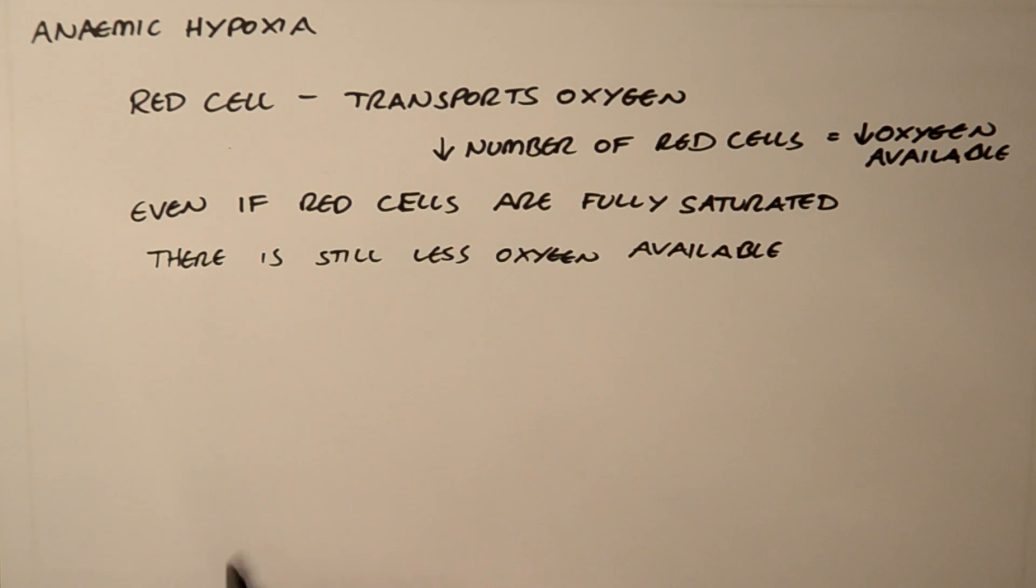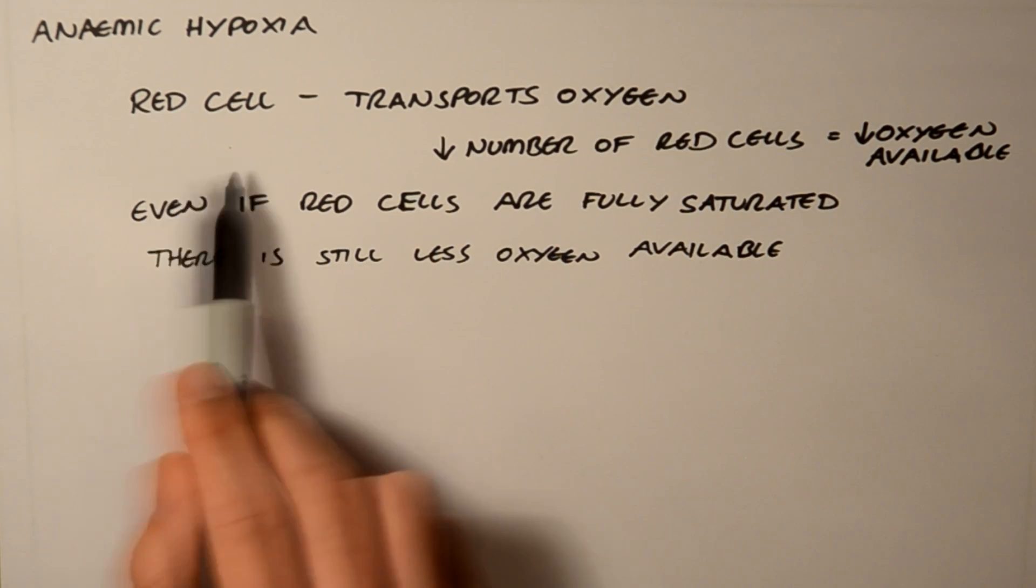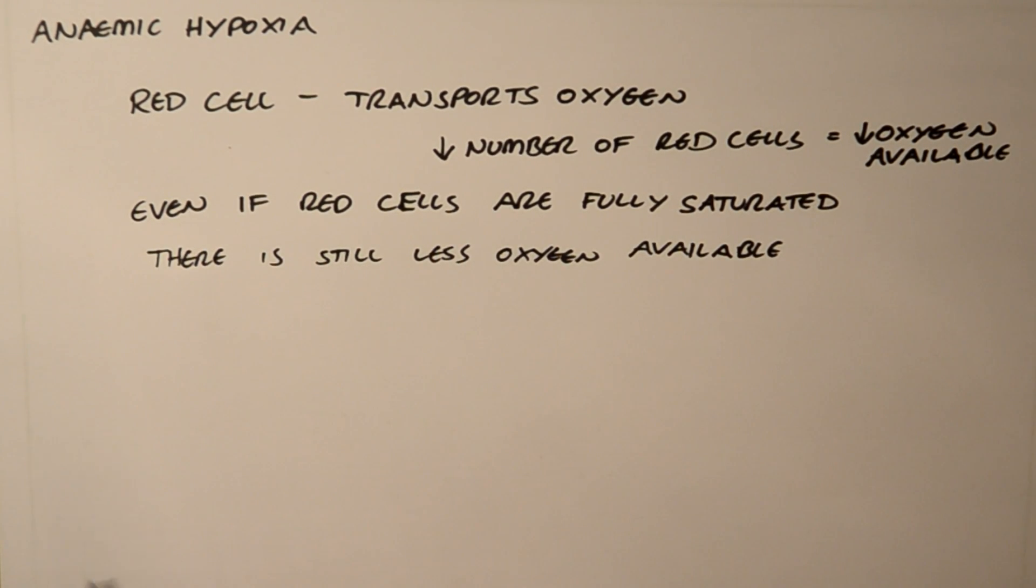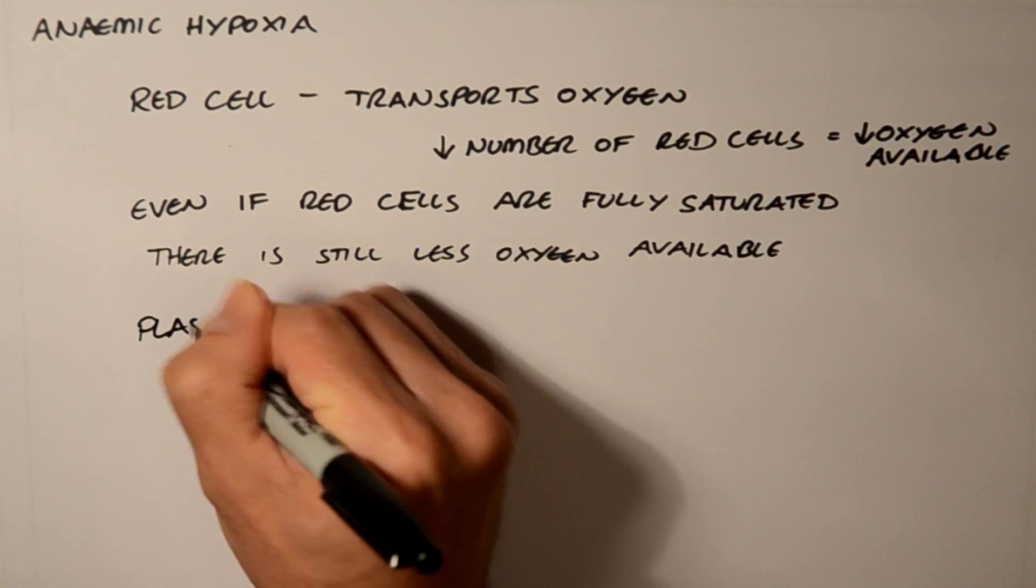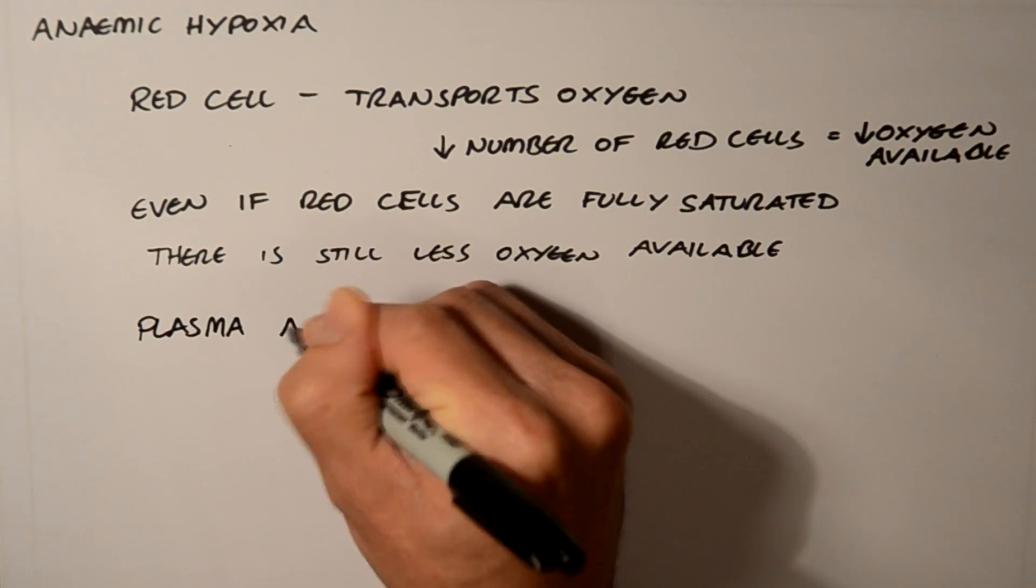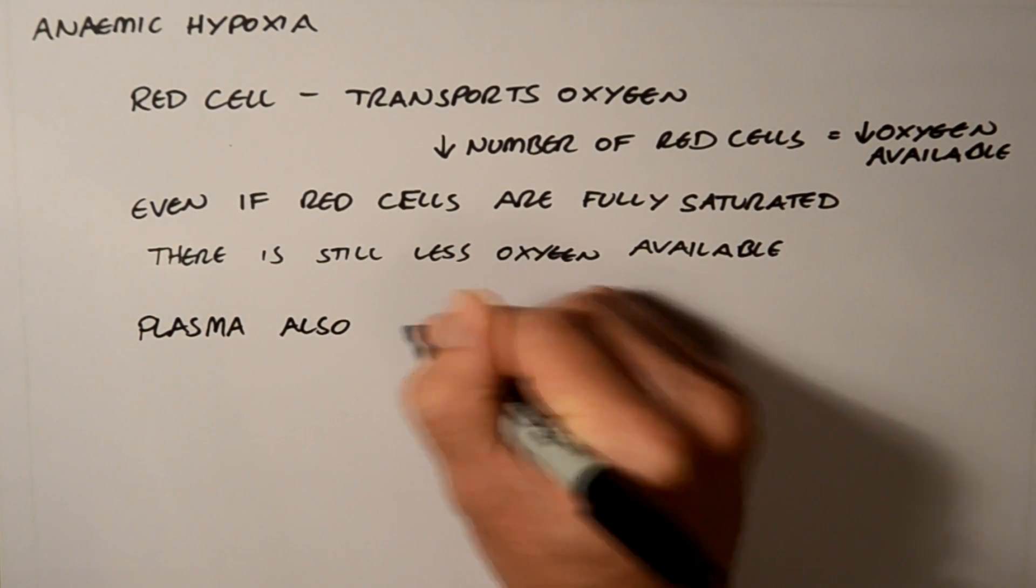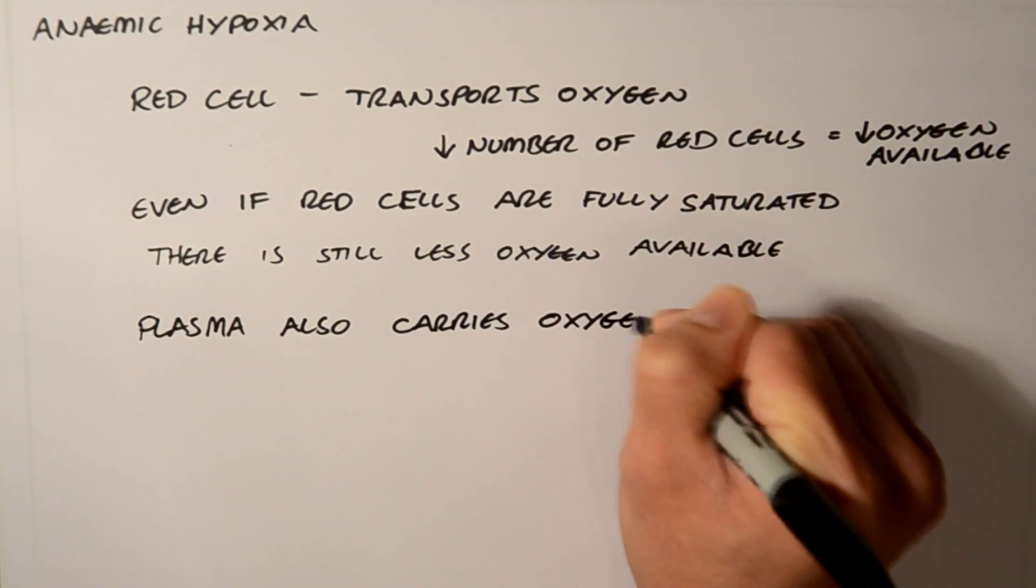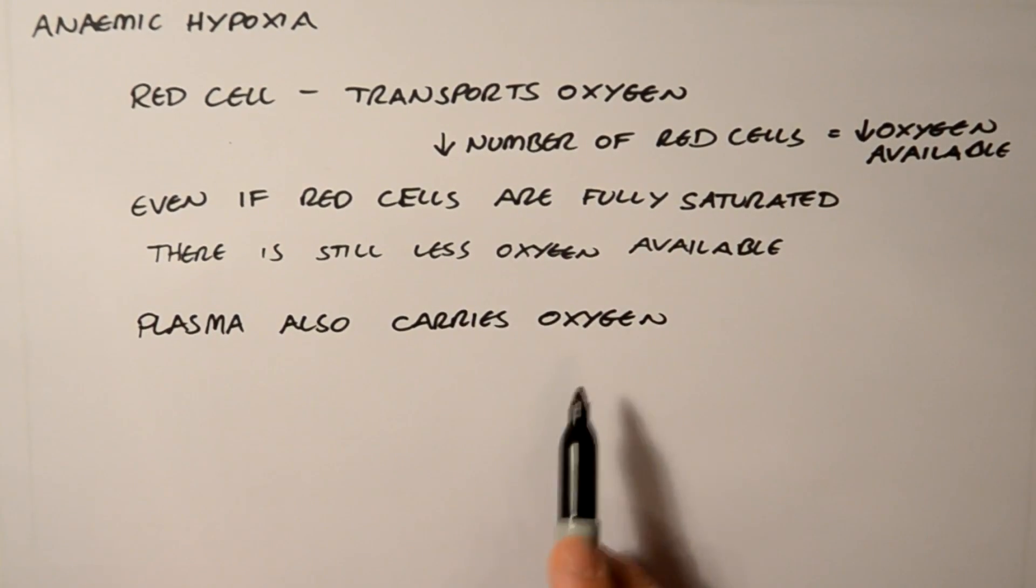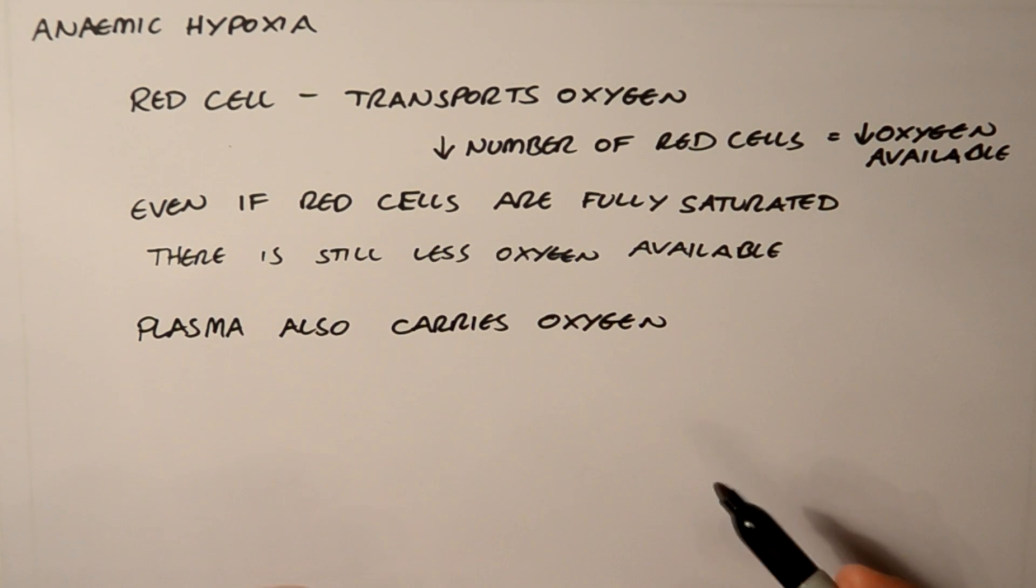A second thing to note is that while the red cell isn't the only thing in the body that can carry oxygen, plasma also carries oxygen. Plasma normally carries a very small amount of oxygen compared to the red cell, about 1% or so.